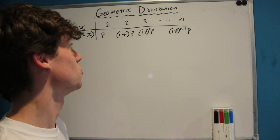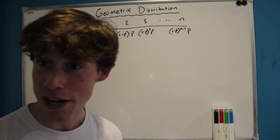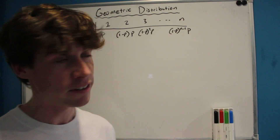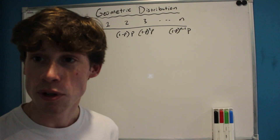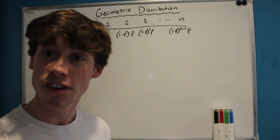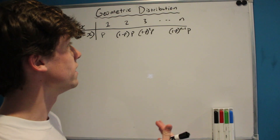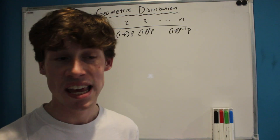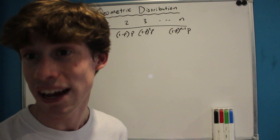Hello everyone, welcome back to another video. Today we're going to be talking about the geometric distribution and finding its mean or expected value and variance. The geometric distribution in statistics is a distribution that has a fixed probability of success, p, and it concerns the probability that we'll have to take n trials to have success.